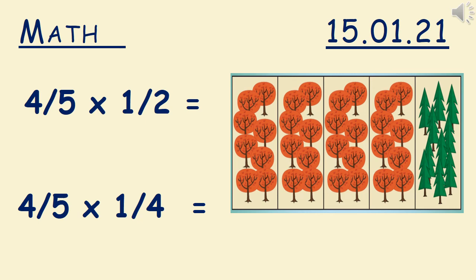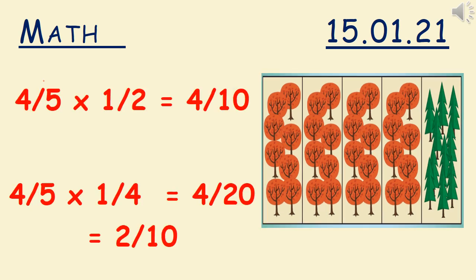Pause the video now and see if you can answer these calculations using our knowledge that we've learnt today. Let's check those answers. So for 4/5 × 1/2, you should have got 4/10. That's because 4 × 1 = 4 and 5 × 2 = 10.